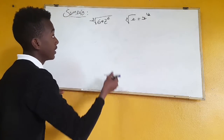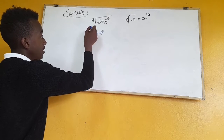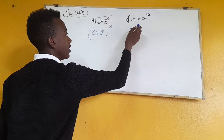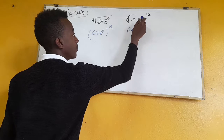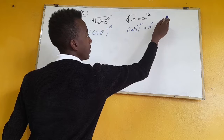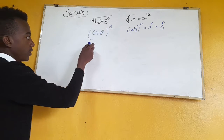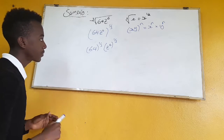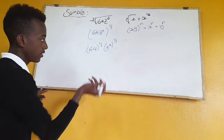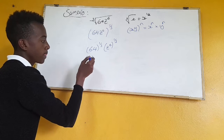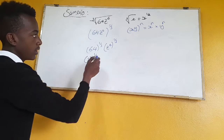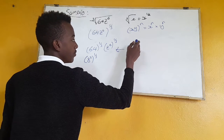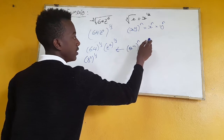x to the power of 1 over 2, and this is y to the power of 1 over 3. We have x times y to the power of n times y to the power of n. So in the final number, 64 to the power of 1 over 3, times x to the power of 1 over 3. Because of that, we write 64 as 8x — the whole thing to the power of 1 over 3.